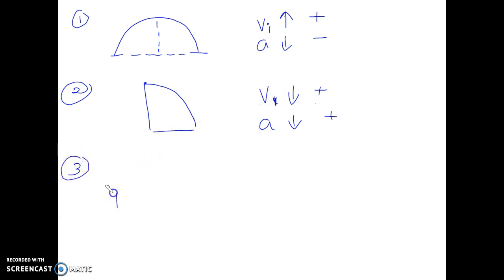So far this is what we've done: we've done full parabola, and we've done half parabola. Here we had vi going upward and positive and acceleration going downward and negative. Here we had vi going downward and positive and acceleration going downward and positive.